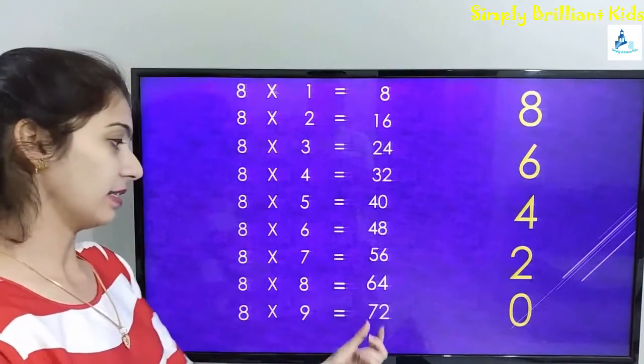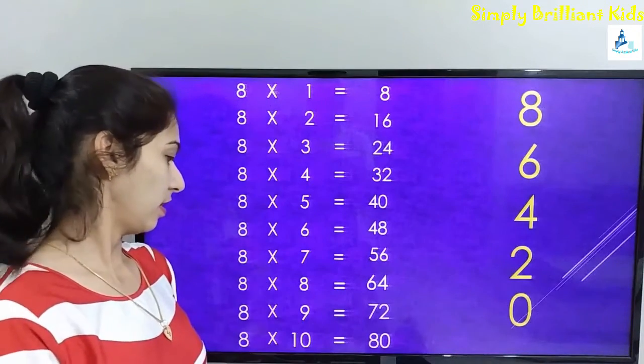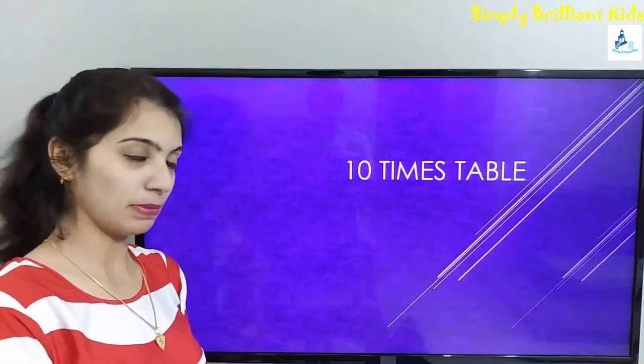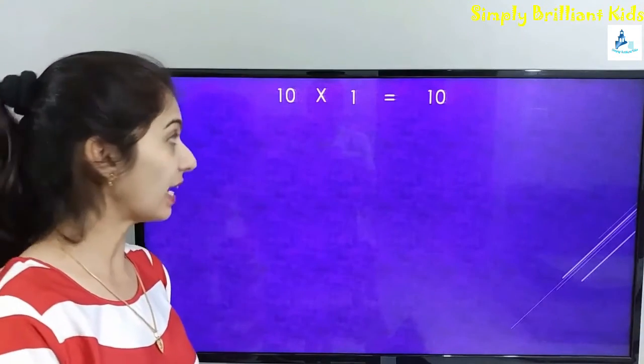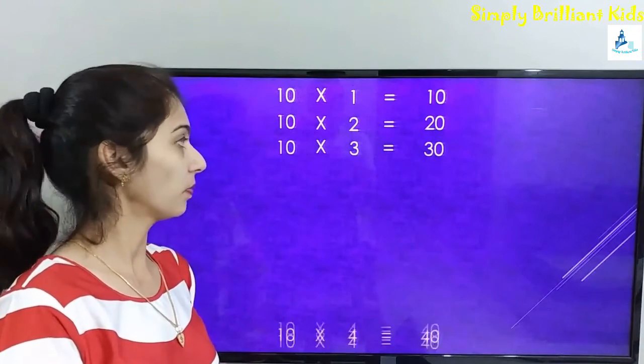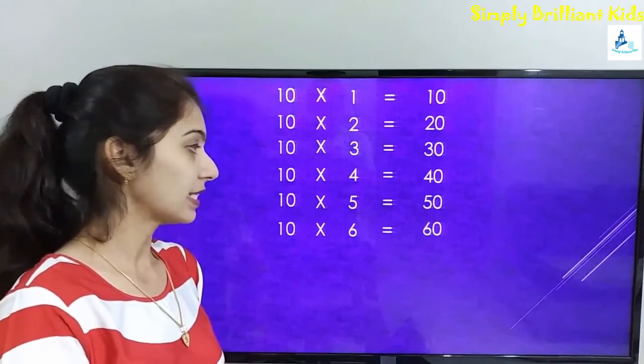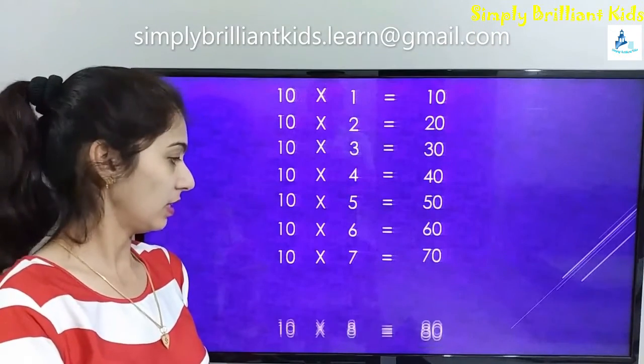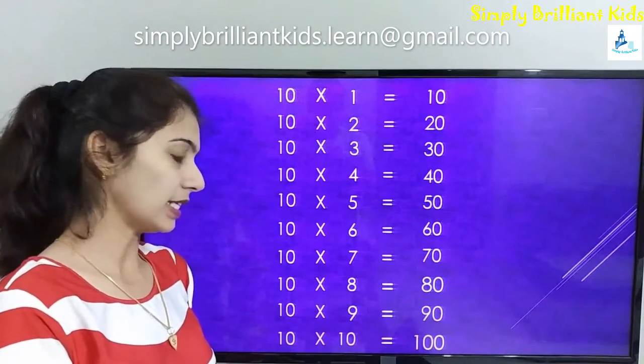Now finally let's learn the ten times table. Ten ones are ten, ten twos are twenty, ten threes are thirty, ten fours are forty, ten fives are fifty, ten sixes are sixty, ten sevens are seventy, ten eights are eighty, ten nines are ninety, ten tens are one hundred.